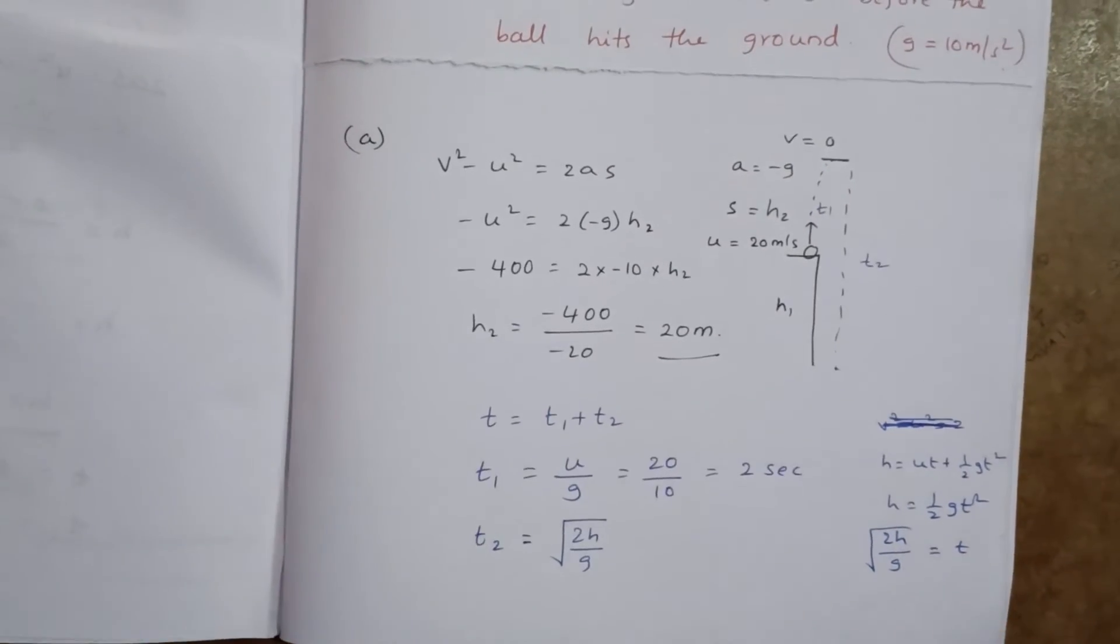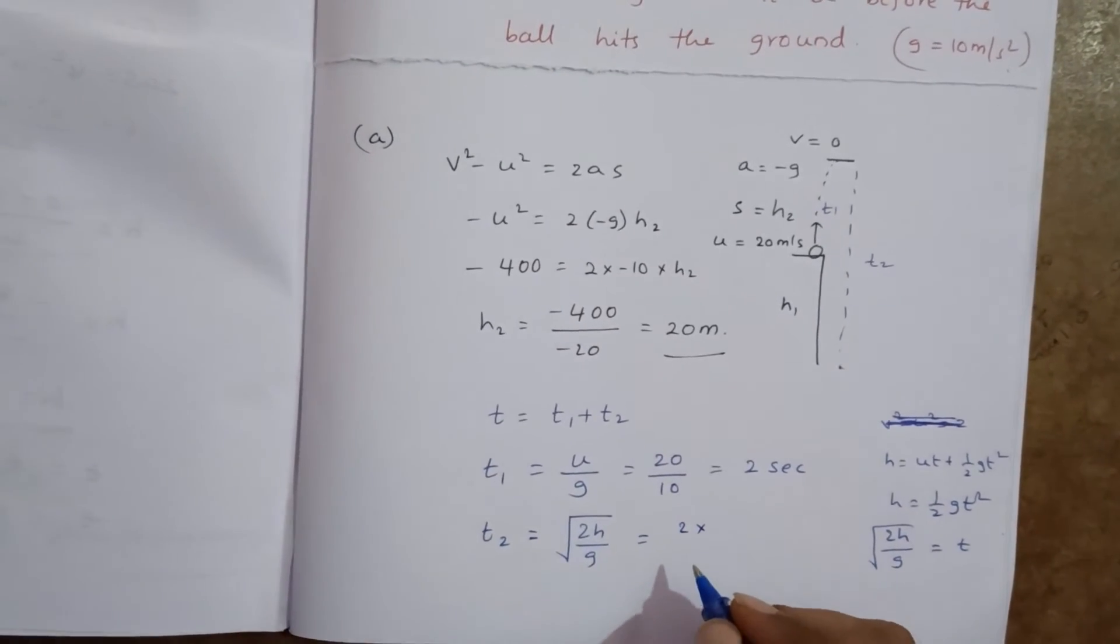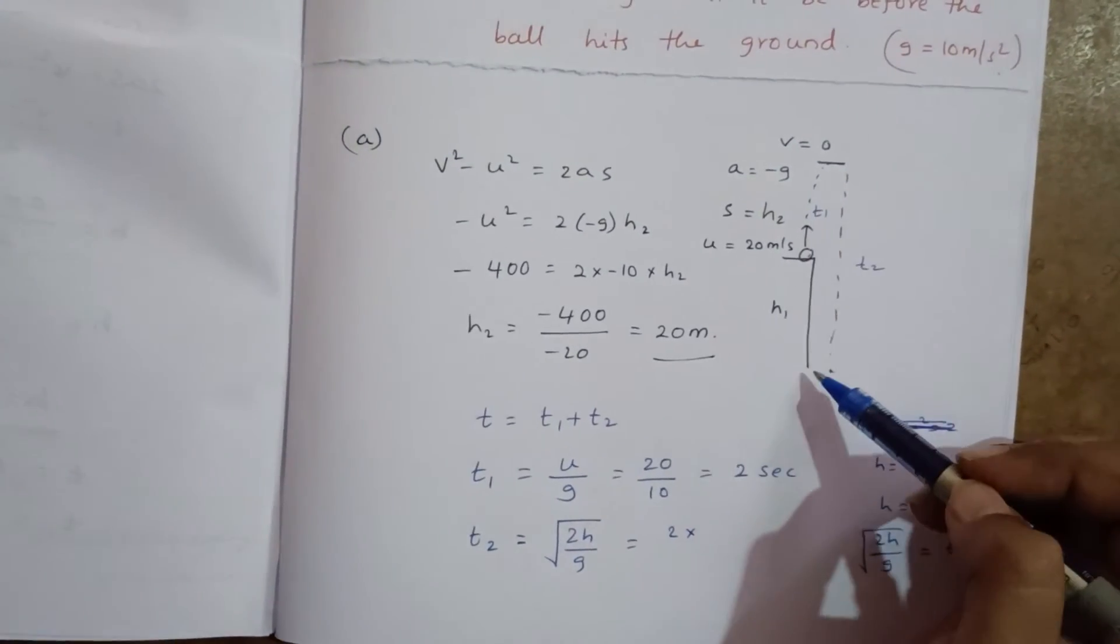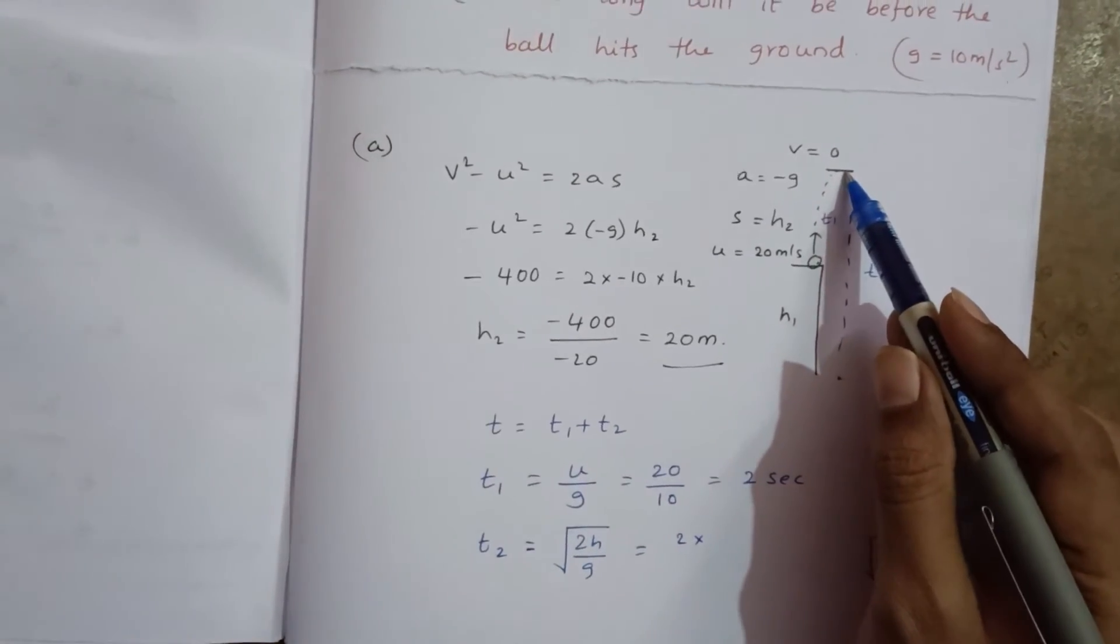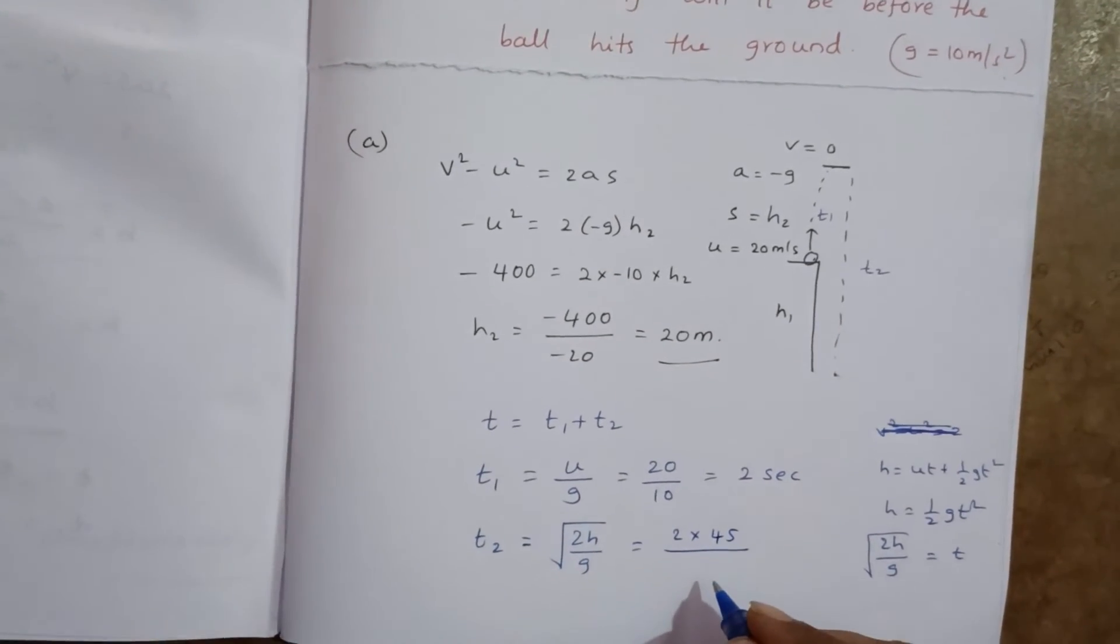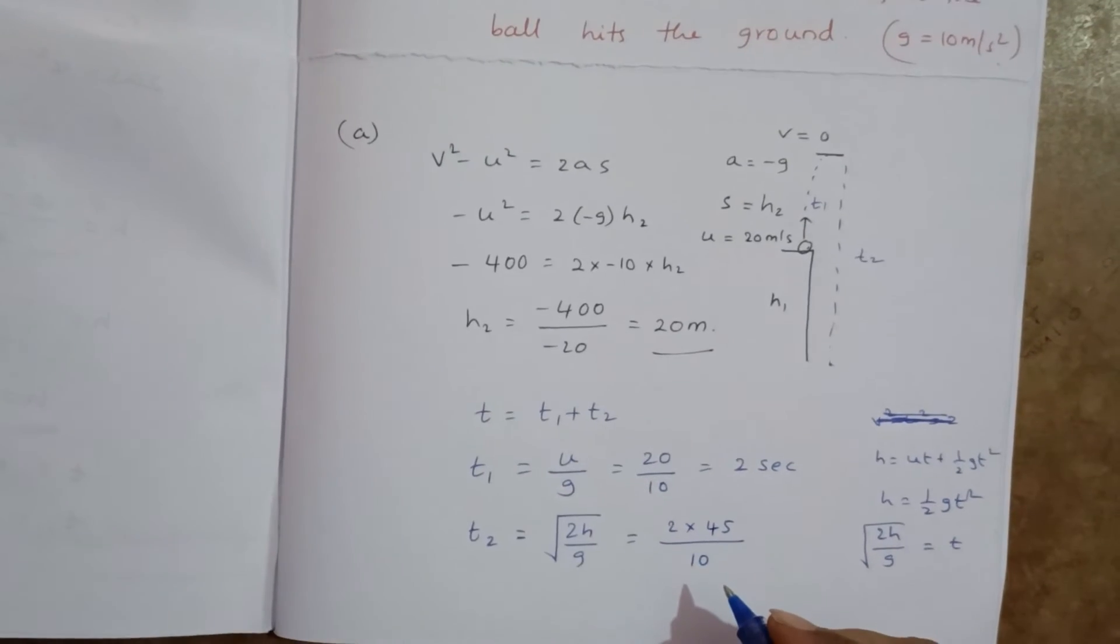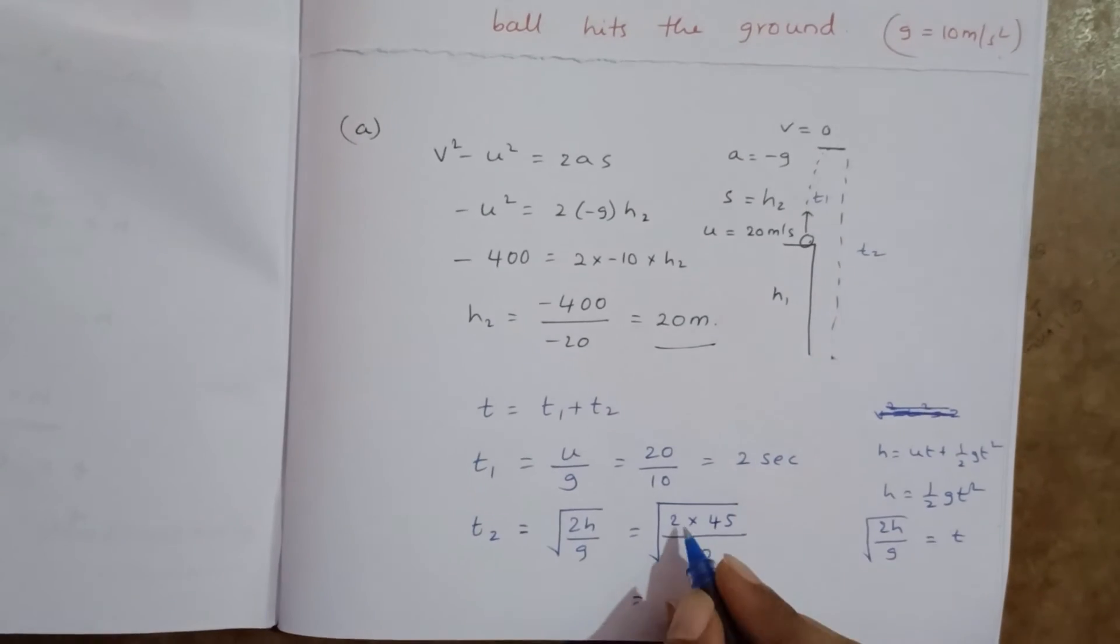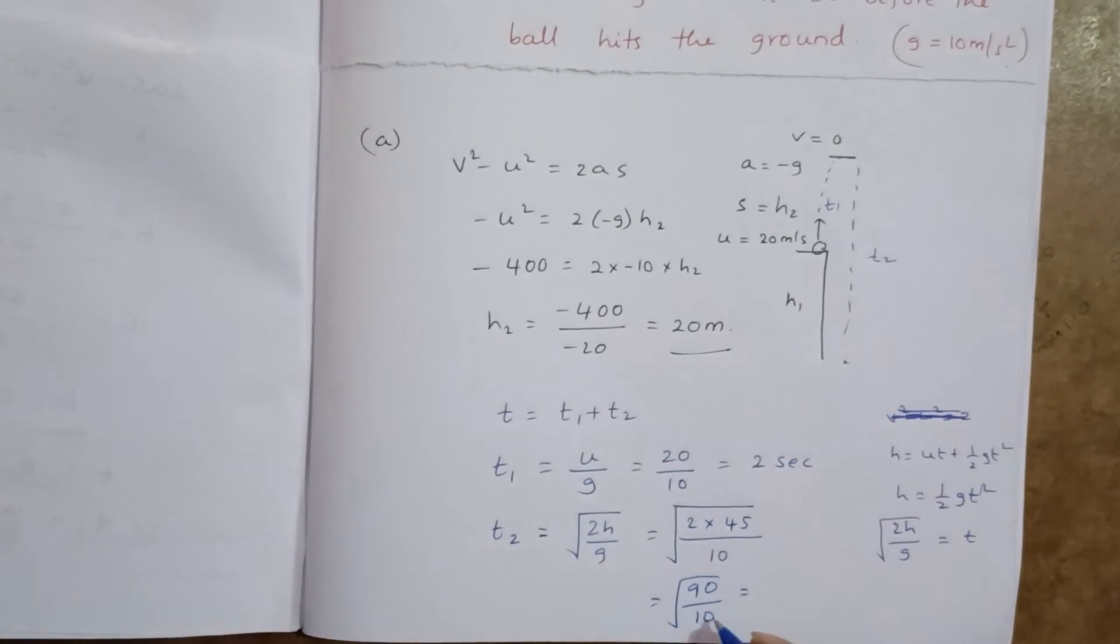T equal to square root of 2h by g. Now 2 into h is how much? So total height, building height 25 meters, and it is going up 20 meters, so total height is 45 meters divided by g value, 10. We can take g value is 10. Square root of then 2 into 45, 90 by 10, 0, 0 cancel, square root of 9.